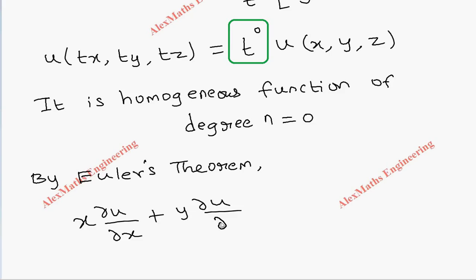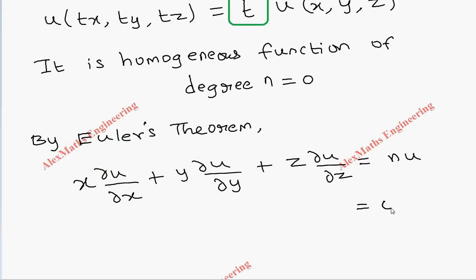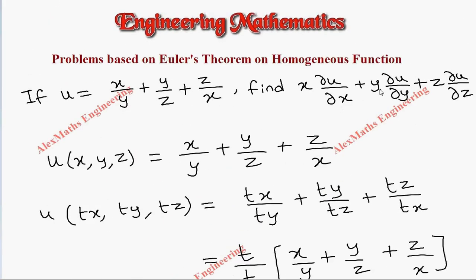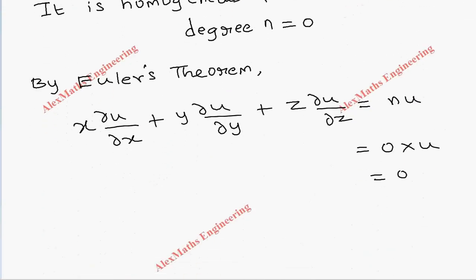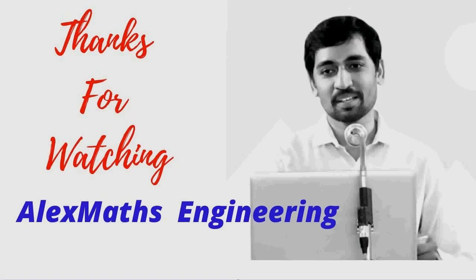into del u by del y plus z into del u by del z, which is nothing but 0.